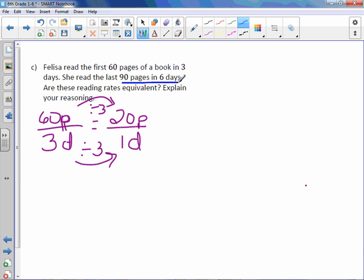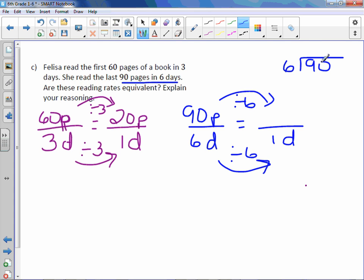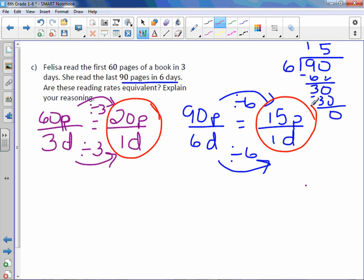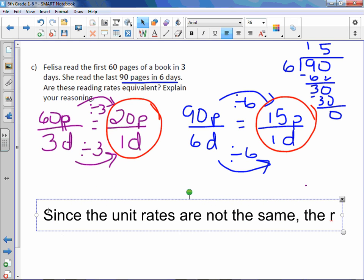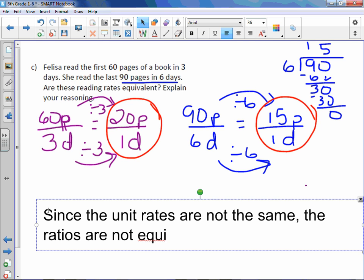And then we have 90 pages in 6 days. So 90 pages, 6 days. Again, make it a unit rate by making the denominator 1. From 6 to 1, we divide by 6 and do the same up top. If you don't know what 90 divided by 6 is, do the long division. 6 goes into 9 once, minus 6 is 3, bring down the 0. 6 goes into 30 exactly 5 times. Which means our rate is 15 pages. We have 20 pages per day and 15 pages per day. They are not the same. Therefore, the ratios are not equivalent. So, since the unit rates are not the same, the rates are not equivalent.